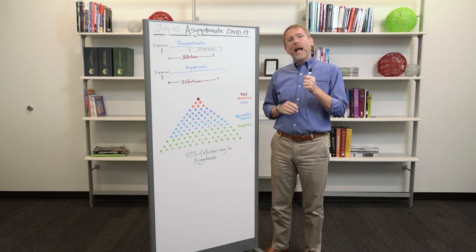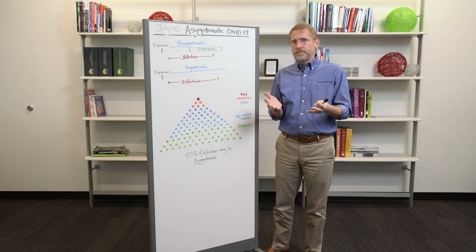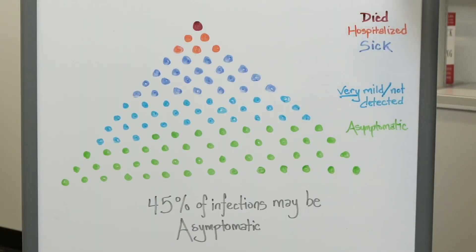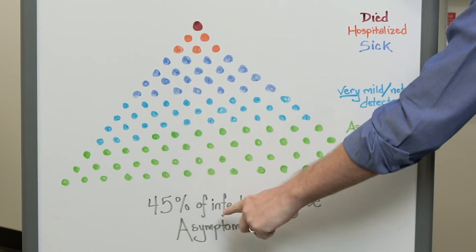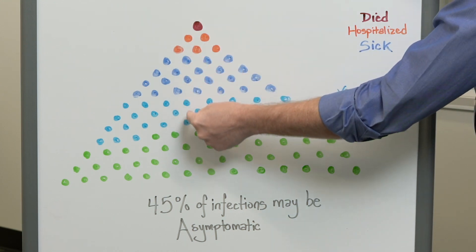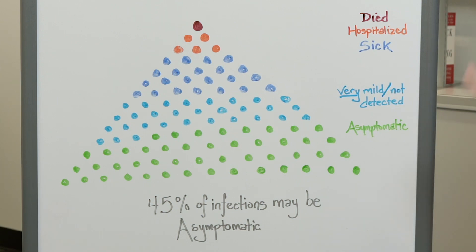So let's start with how many people are actually asymptomatic. And to do that I've got a general pyramid here. As we move down we are moving from people that are incredibly ill to people that have less and less symptoms to people in green that are asymptomatic.